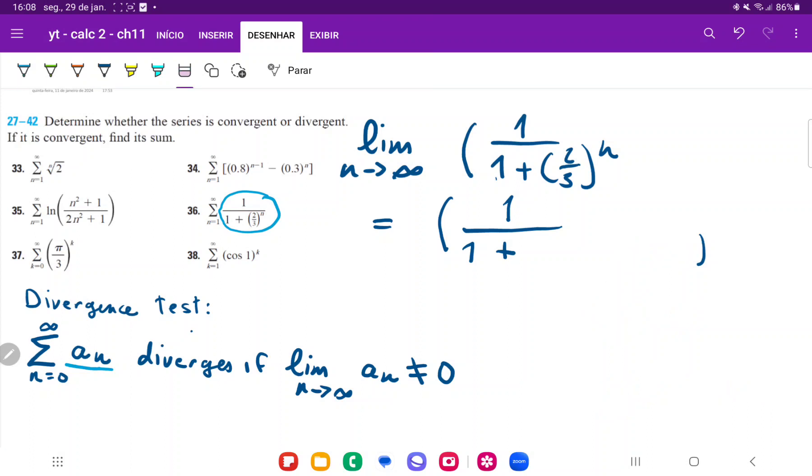So with that being said, this limit, if we apply it, is going to be 1 divided by 1 plus zero, because 2/3 to the power of n, as n gets large, goes to zero. And that's the same thing as 1.